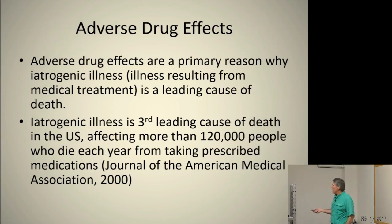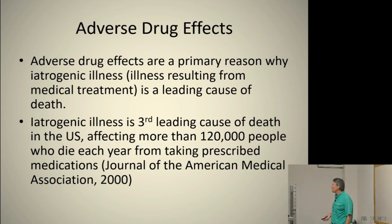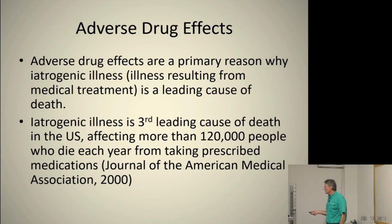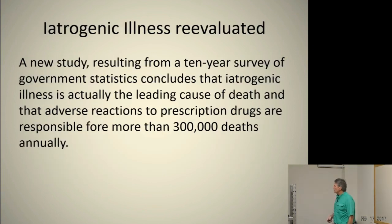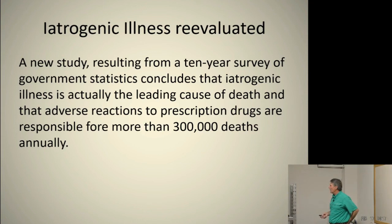Adverse drug effects are the primary reason why iatrogenic illness — illness resulting from medical treatments — is a leading cause of death. Iatrogenic illness is the third leading cause of death in the US. More than 120,000 people die each year from taking prescribed medicines, according to the American Medical Journal in 2000. A new study from a 10-year analysis of government statistics concludes that iatrogenic illness is actually the leading cause of death, and that adverse reactions to prescription drugs are responsible for over 300,000 deaths a year.